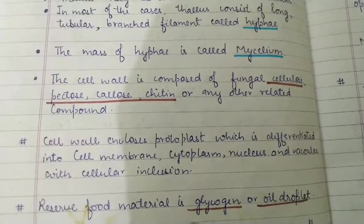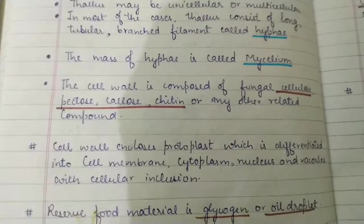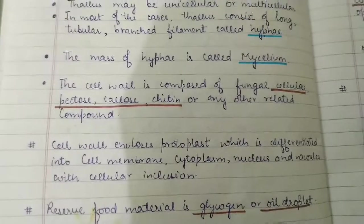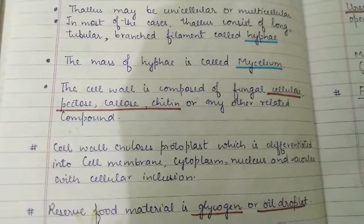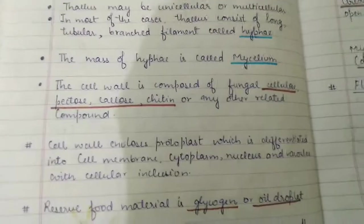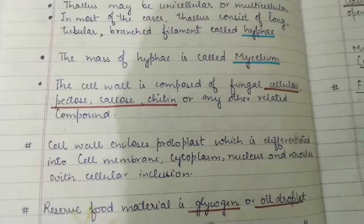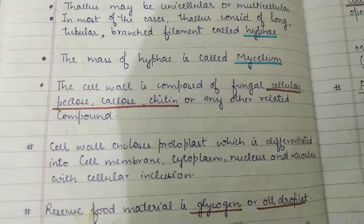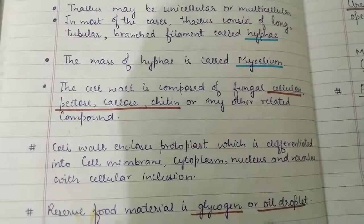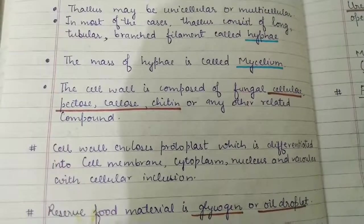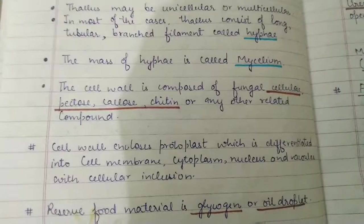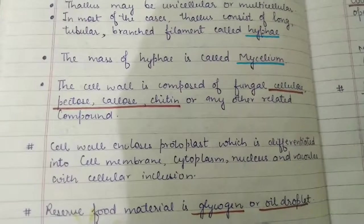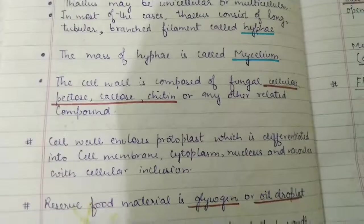The cell wall encloses the protoplast. Inside the cell wall, the protoplast is present, which is further differentiated into nucleus, cytoplasm, vacuoles, and other cellular inclusions — mitochondria, Golgi apparatus, endoplasmic reticulum, ribosomes, and all other organelles — because fungi are eukaryotic.